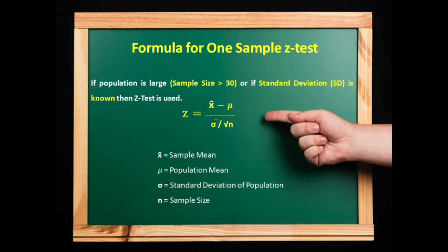If population is large, that is sample size is greater than 30, or if standard deviation is known, then Z-test is used and the formula which is applied is Z equals x bar minus μ upon σ by under root n.